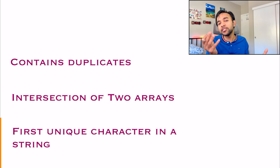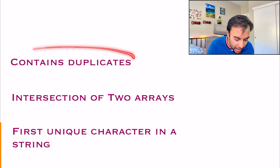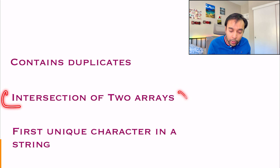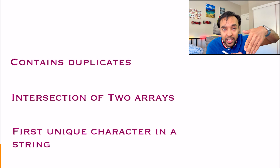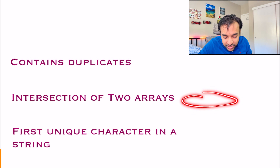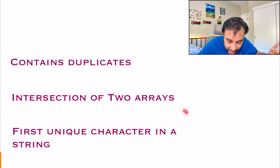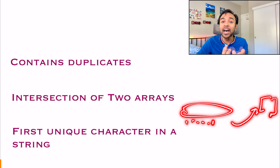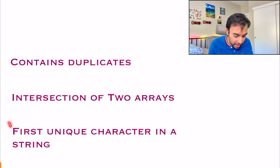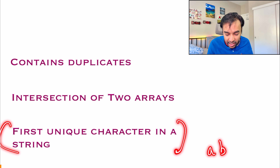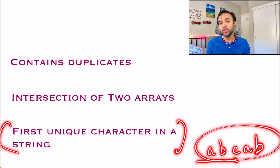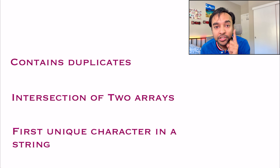Based on a similar idea, you can solve multiple other problems. Contains duplicates: add elements to a set and if you encounter one again, you have a duplicate. Intersection of two arrays: add all elements of the first array to a set, then iterate over the second array — as soon as you find something already present in the hash set, that is the intersection point. First unique character in a string: add all characters to a hash map with frequencies; the first character with a frequency of one is your answer.